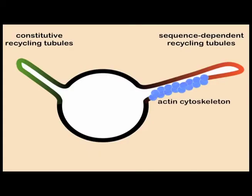Such diversity in these pathways begged the question, what was so special about these tubules that mediated sequence-dependent recycling? We observed that a dynamic actin cytoskeleton was specifically localized on this subset of tubules. This actin machinery stabilizes this subset of endosomal tubules.